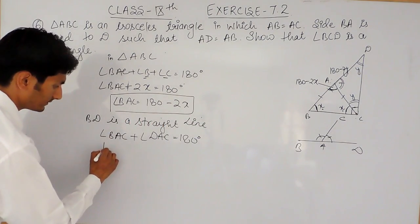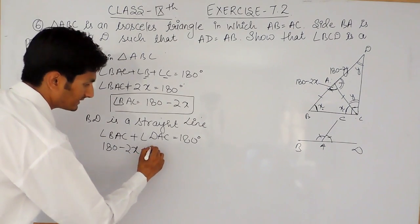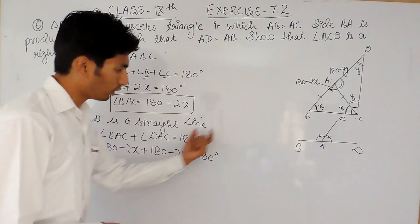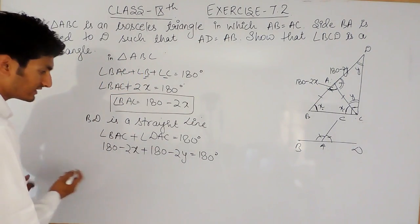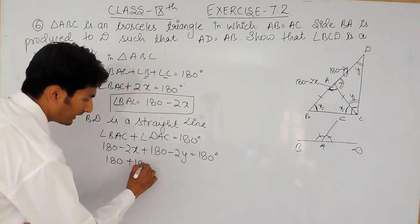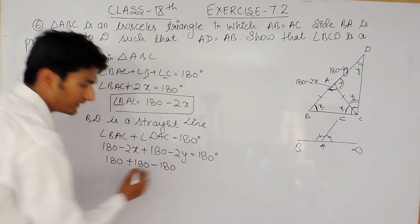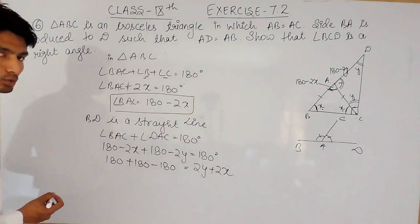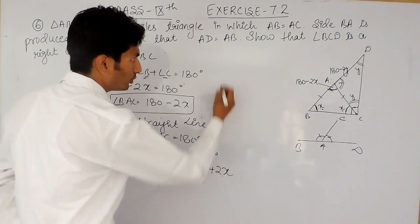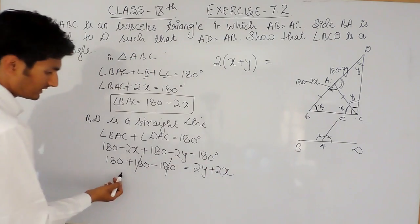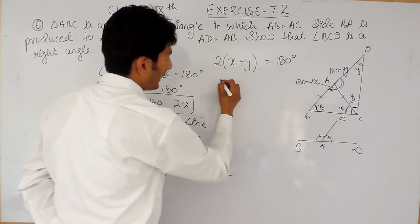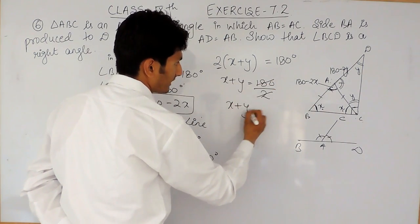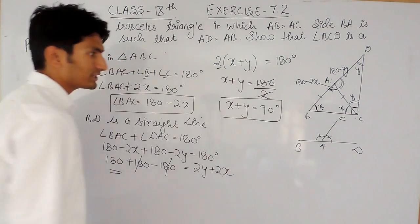Angle BAC is 180 minus 2X, and angle DAC is 180 minus 2Y, and their sum equals 180. So 180 minus 2X plus 180 minus 2Y equals 180. Rearranging: 180 plus 180 minus 180 equals 2X plus 2Y, giving 180 equals 2X plus 2Y. Taking 2 as common: 2 times (X plus Y) equals 180, so X plus Y equals 90 degrees.